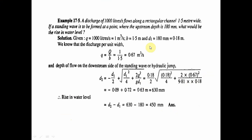Next problem: A discharge of 1000 liters per second flows along a rectangular channel 1.5 meters wide. If a standing wave is to be formed at a point where the upstream depth is 180 mm, what would be the rise in water level? Given: Q = 1000 L/s = 1 m³/s, b = 1.5 meters, d1 = 180 mm = 0.18 meters. Discharge per unit width q = Q/b = 1/1.5 = 0.67 m²/s.